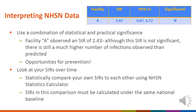In the previous example, Facility A had an SIR of 2.43. Because it's greater than 1, it means that the number of observed infections is higher than the number of predicted infections. Even though this SIR is not significantly different from the national baseline, there is still an excess number of observed infections and prevention activities may be needed.